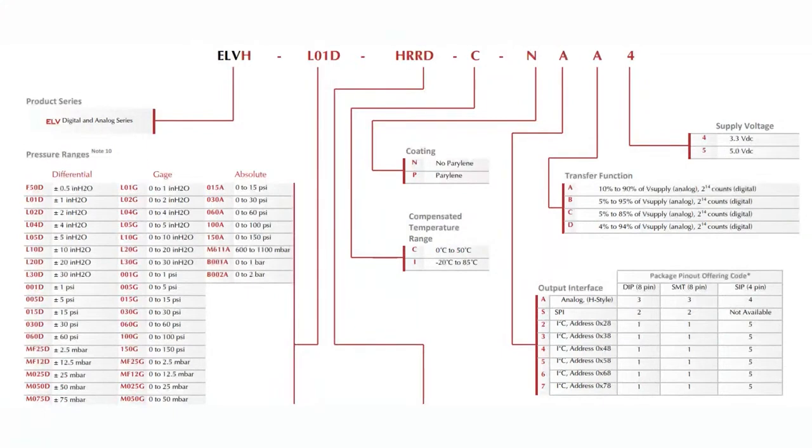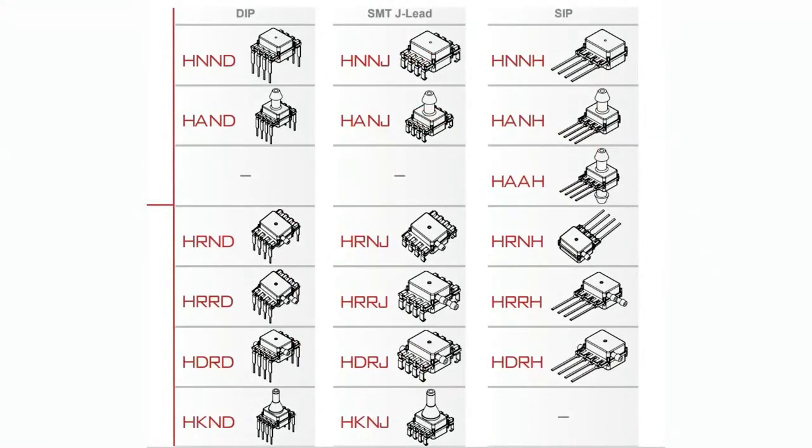So really like this covers everything, like you, no matter what your use case is, you're going to find one that is set up for the pressure you need, whether or not you need coding, the temperature range, I squared C or SPI. And then the transfer function, I think is only for analog. I don't think it's useful for I squared C or SPI and the supply voltage, all the different packages that comes with it. There's a lot.